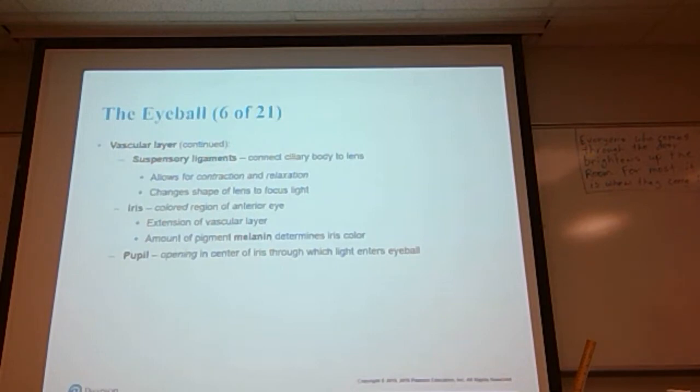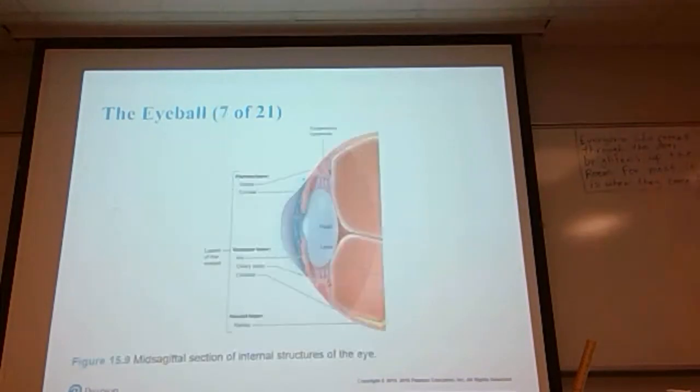The iris is the colored region of the eye. It is an extension of the vascular layer. The amount of pigment or melanin determines iris color. If you've ever seen, for instance, an albino rabbit or an albino rat, you notice that they have pink eyes. The reason they have pink eyes is they are not producing any melanin in their eyes and in the iris, and what you are actually seeing is the blood flow that is going through that part of the eye. The pupil is the opening in the center of the eye, or center of the iris, through which light enters the eyeball. The pupil is actually the opening—it is not a true structure, it's just a name given to the opening in the eye. Again, there is the pupil, the suspensory ligaments changing shape of the lens, the iris as the colored part of the eye, and the choroid down here.